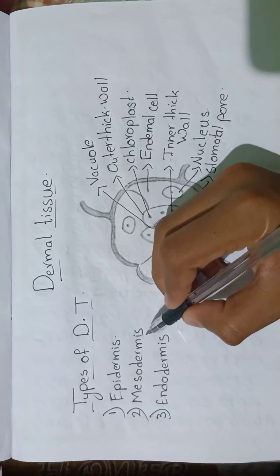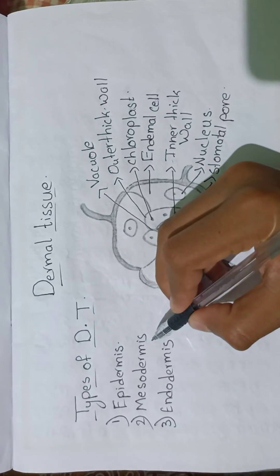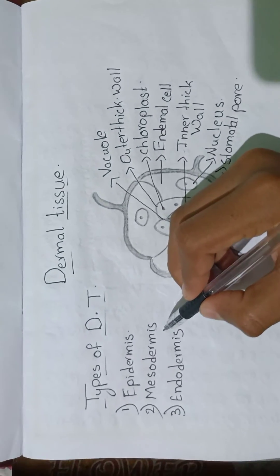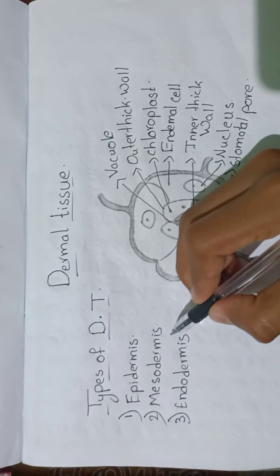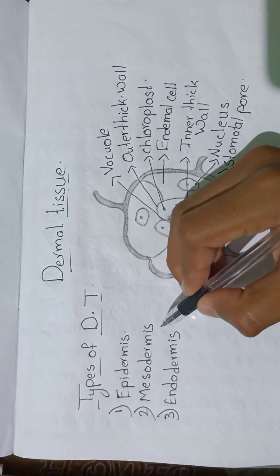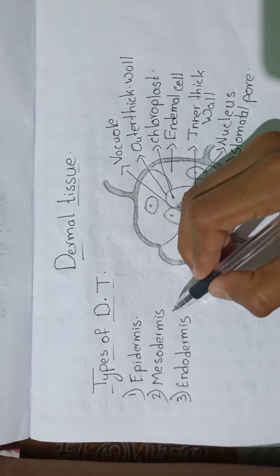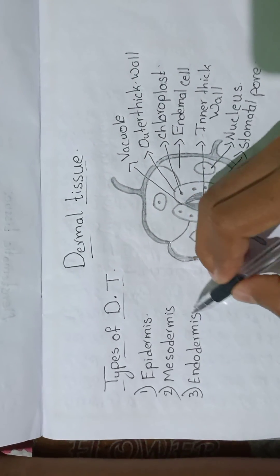Mesodermis is the middle layer of cells present between the epidermis and endodermis.